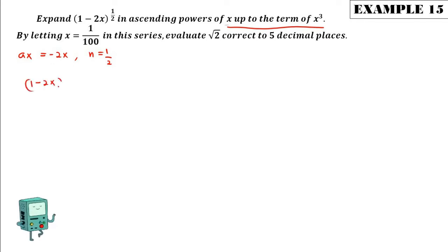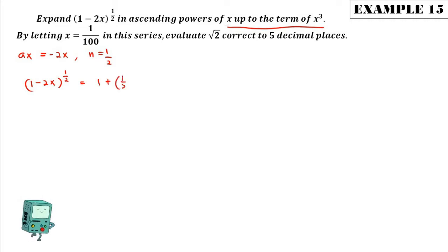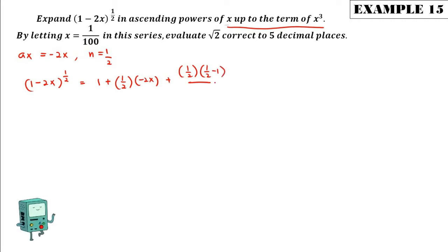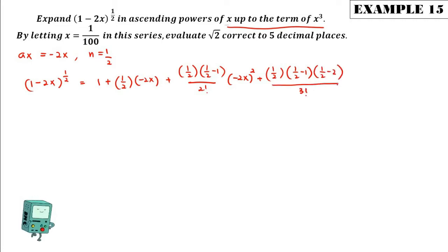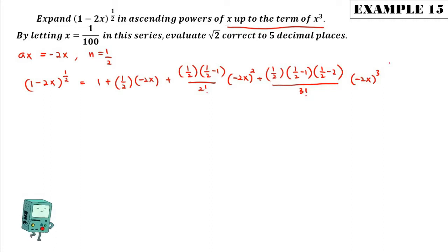So (1 - 2x) to the power of 1/2 will become 1 plus n·(ax), which gives us (1/2)(−2x), plus (1/2)(1/2 − 1) over 2! times (−2x) squared, plus (1/2)(1/2 − 1) over 3! times (−2x) cubed. Because it is an infinite expansion, we add dot dot dot at the end.